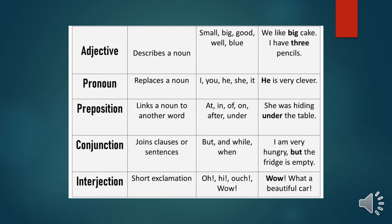Conjunctions are words that join clauses or sentences, like the FANBOYS or subordinating conjunctions. Example: 'I am very hungry but the fridge is empty' — 'but' is a conjunction. Interjections are short exclamations used in exclamatory sentences, such as: oh, hi, ouch, wow, oh my god — all of these are interjections.